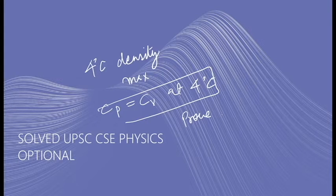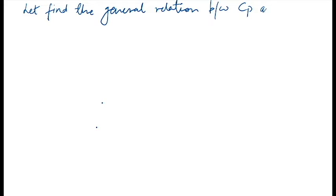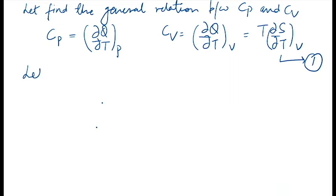Let's start with our solution. We will find the general relation between Cp and Cv. Cp is defined as del Q by del T at constant pressure, and Cv is del Q by del T at constant volume. We can rewrite Cv as T times dS/dT at constant volume — this is equation number one. Now let's assume entropy S as a function of temperature T and volume V.